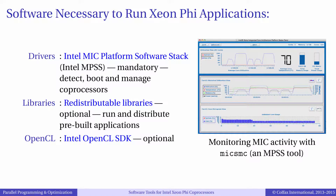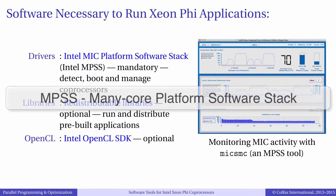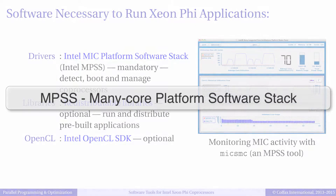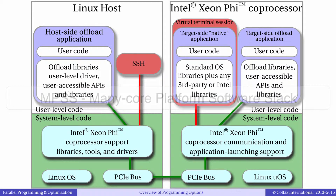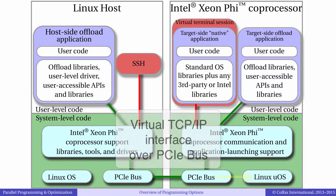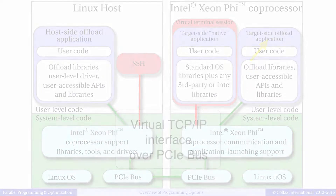We will begin with software that is necessary to boot co-processors and to run precompiled executables on them. First and foremost you must have MPSS, the Many Core Platform Software Stack, running in order to use your co-processors. The MPSS daemon is responsible for loading the operating system image onto the co-processors at boot, creating the virtual network and assigning IP addresses to the co-processors, and for enabling communication between host applications and the co-processors.